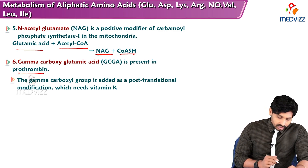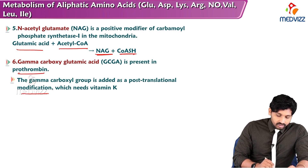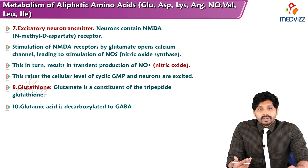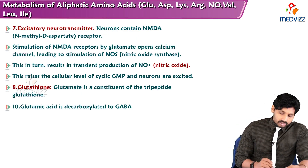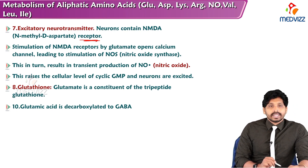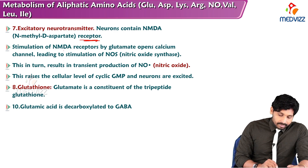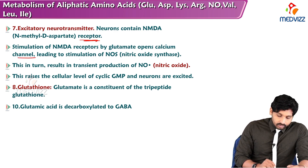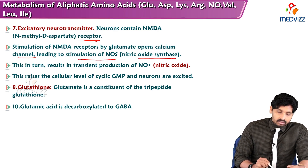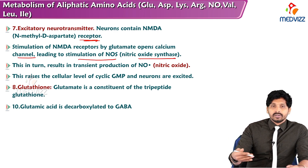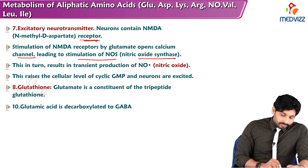Gamma carboxyglutamic acid is present in prothrombin and is required for blood coagulation. The gamma carboxyl group is added as a post-translational modification requiring vitamin K. Glutamate also acts as an excitatory neurotransmitter: neurons containing N-methyl-D-aspartate (NMDA) receptors are stimulated by glutamate.